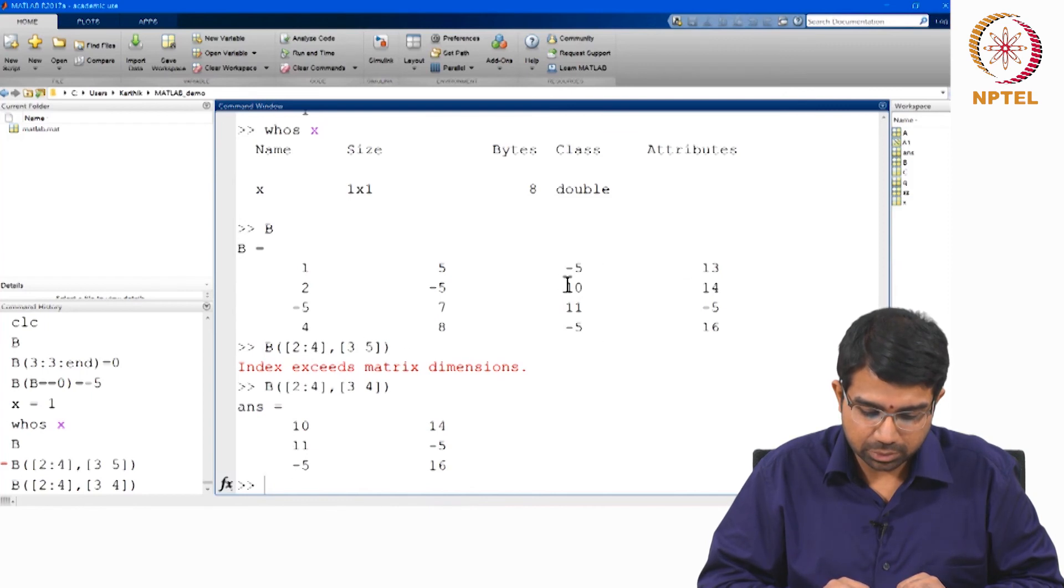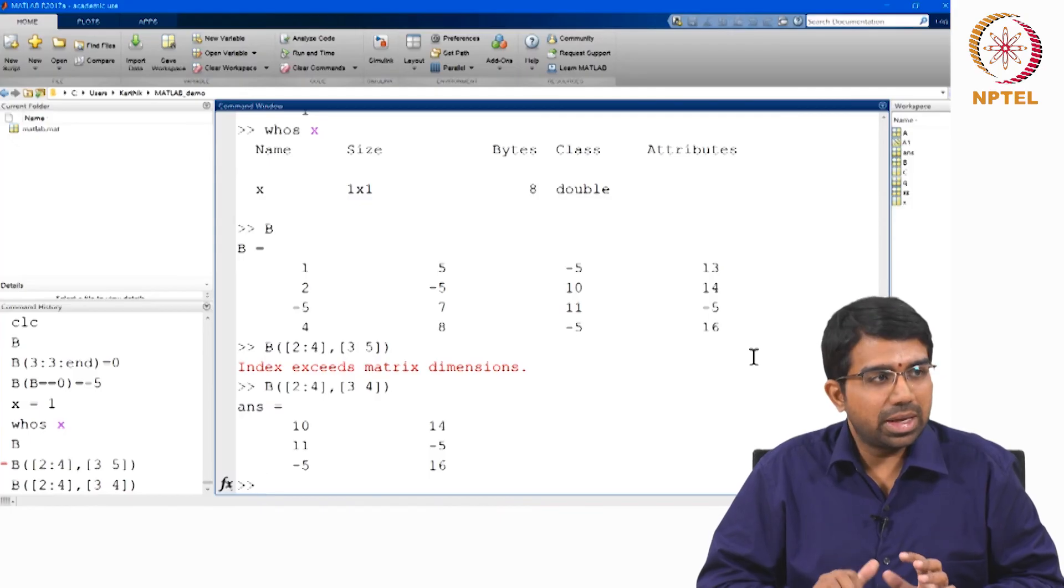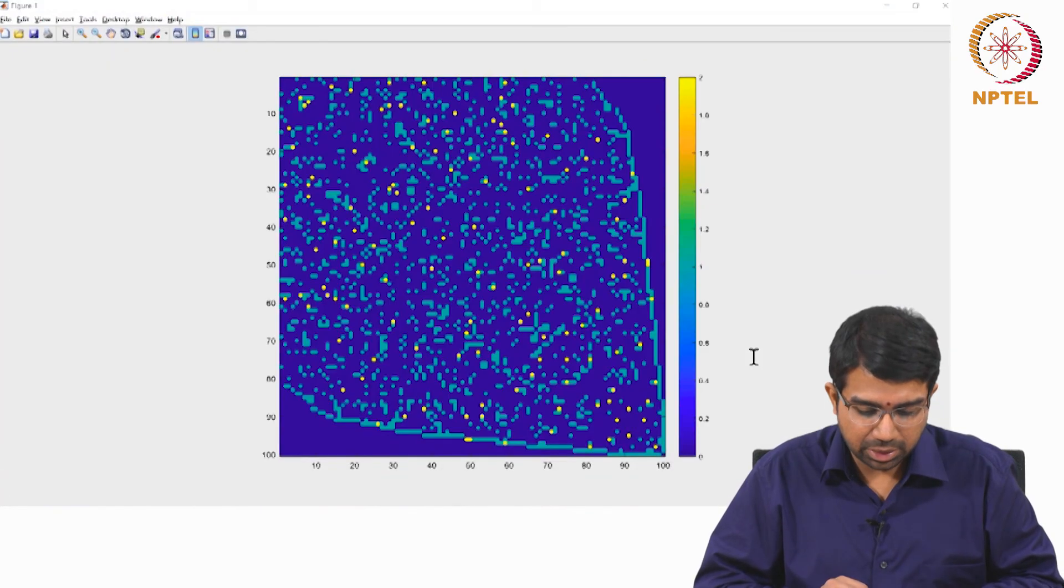So this gets me the second, third and fourth rows and the third and fourth columns. So this part of the matrix, so 10, 14, 11, minus 5 and minus 5, 16, right. You can do any kind of submatrix indexing in MATLAB.